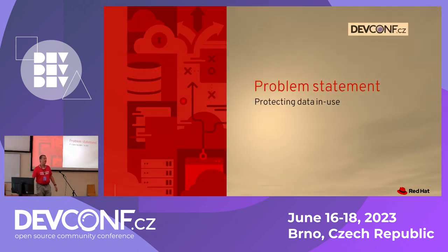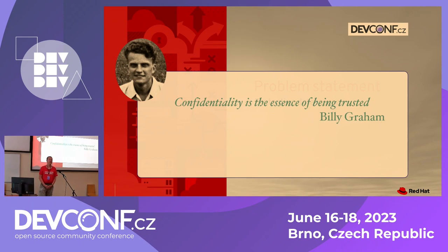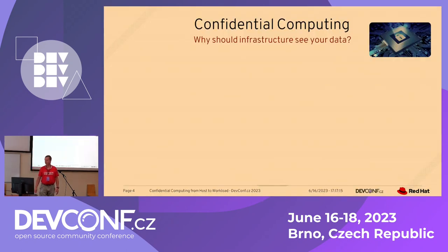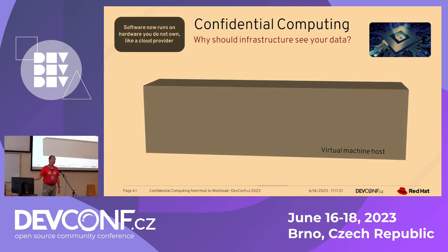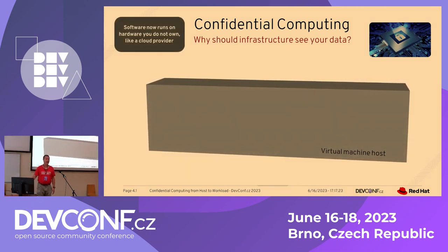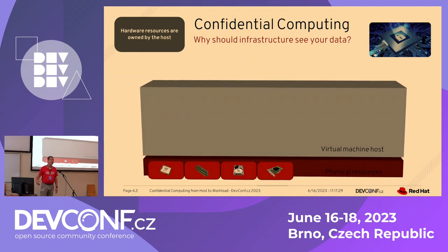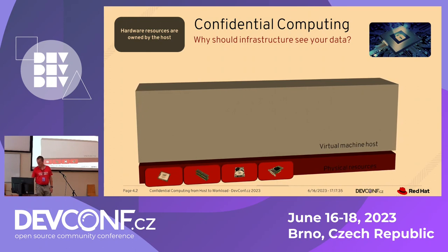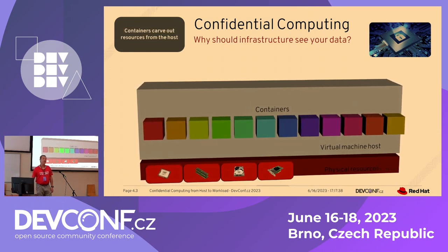The problem statement is how to protect data in use — that is, data in memory. Confidentiality is really the essence of trust, and it's broken right now in the cloud because your infrastructure essentially sees your data. The software you run is on the cloud, also known as someone else's computer. The hardware resources are owned by that host — you don't buy the memory, you just rent it.